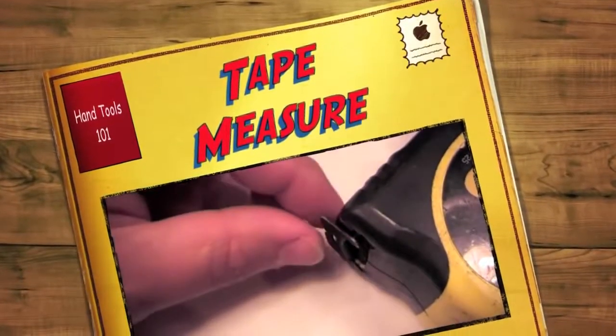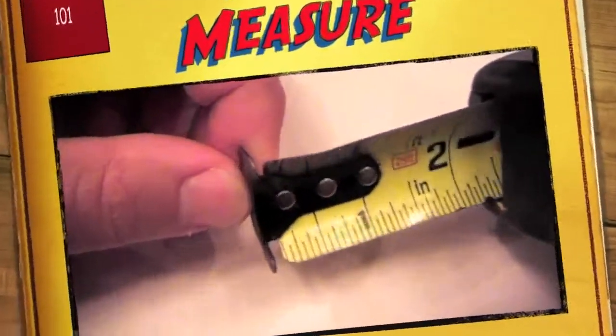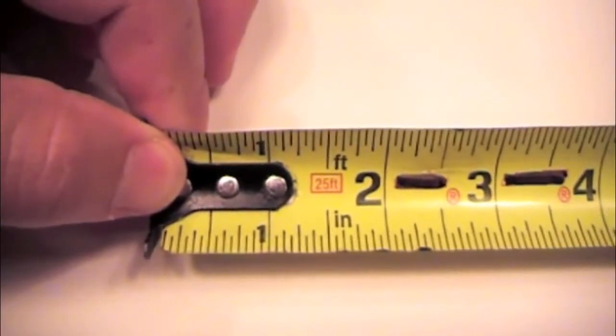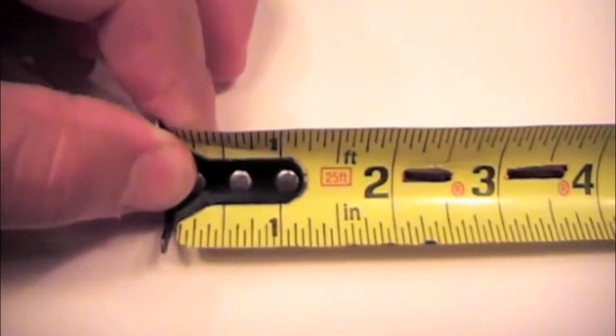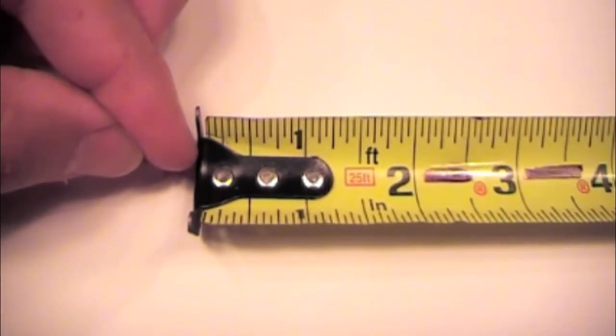Here we have a standard 25-foot tape measure. At the end of the tape measure, we have a little hook. As we extend the tape out of the tape measure, we see that we have standard numbers starting at the end, which would be zero.